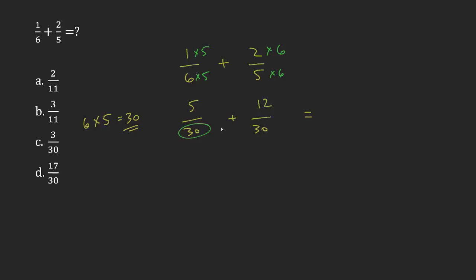If the bottoms are the same, the denominators are the same, then you can just add the tops to get your answer. So 5 plus 12 is 17. This is 17 over 30, which means that my answer is D.